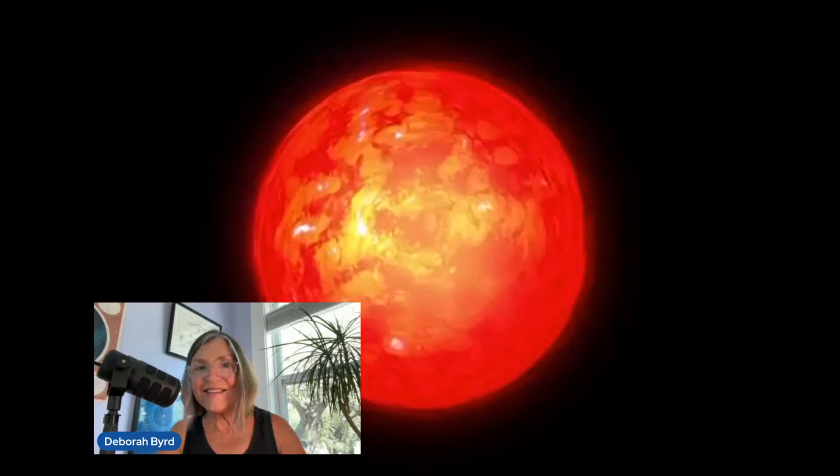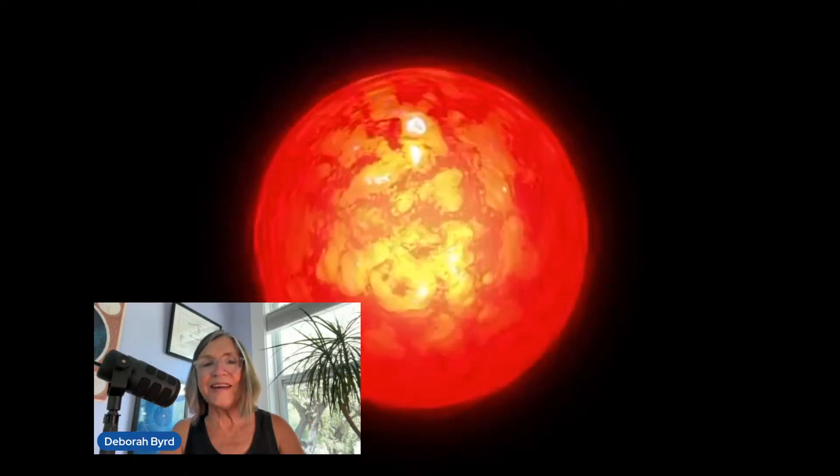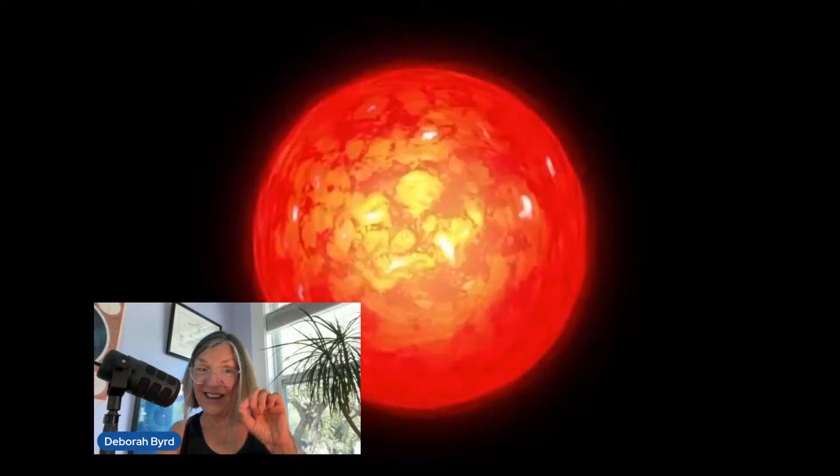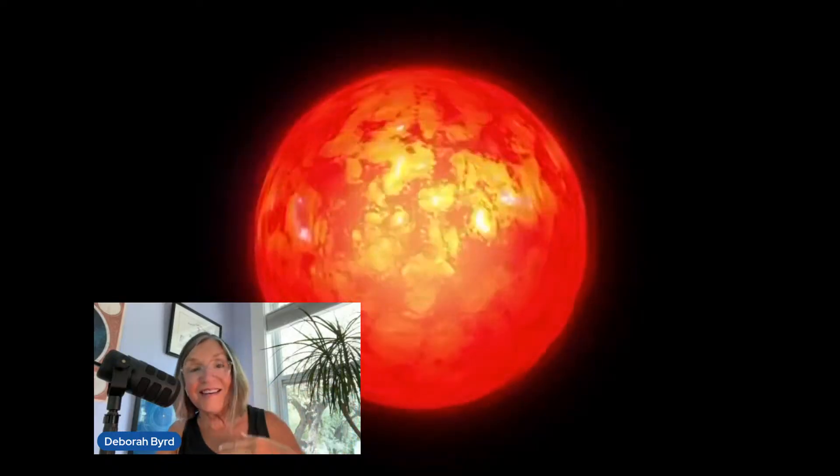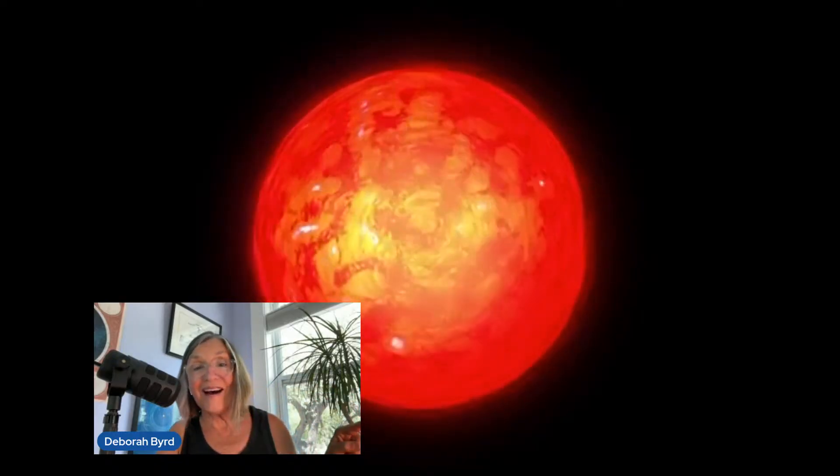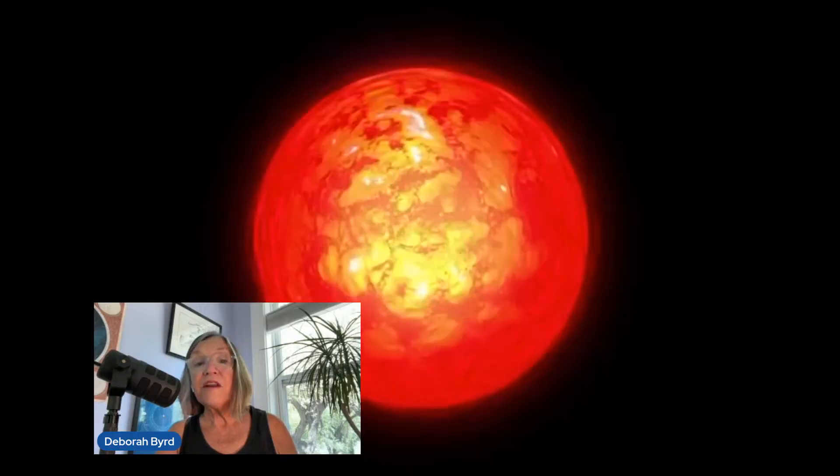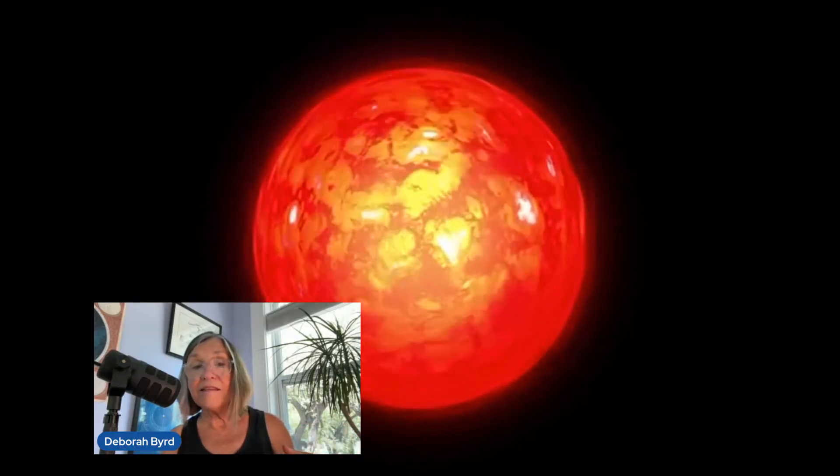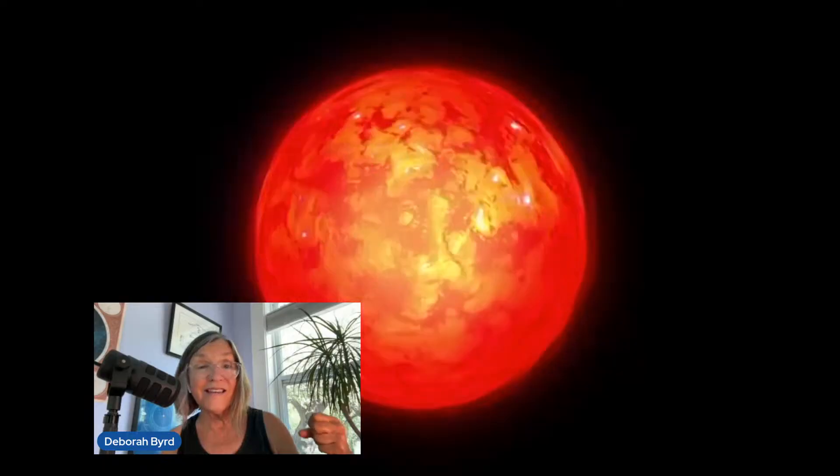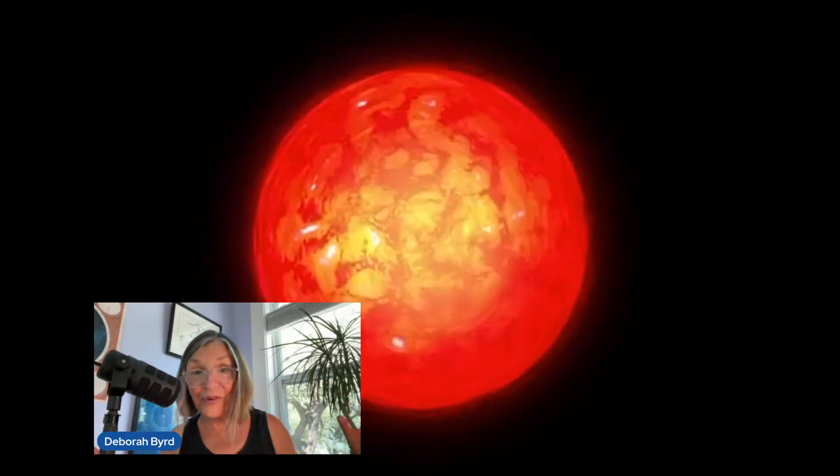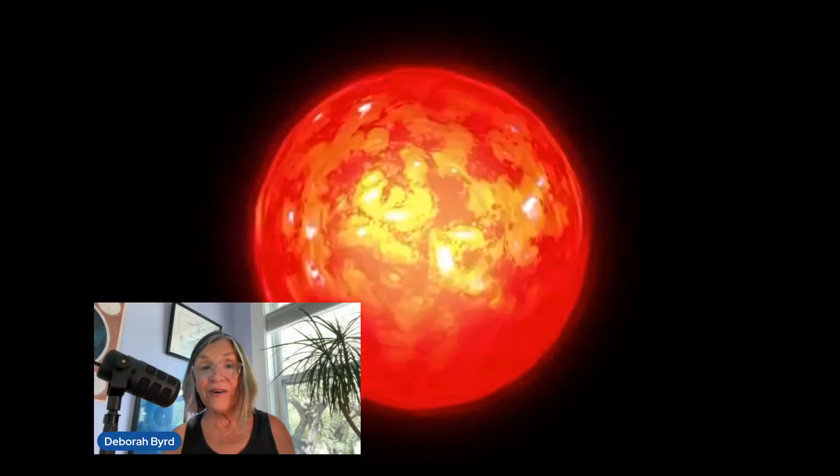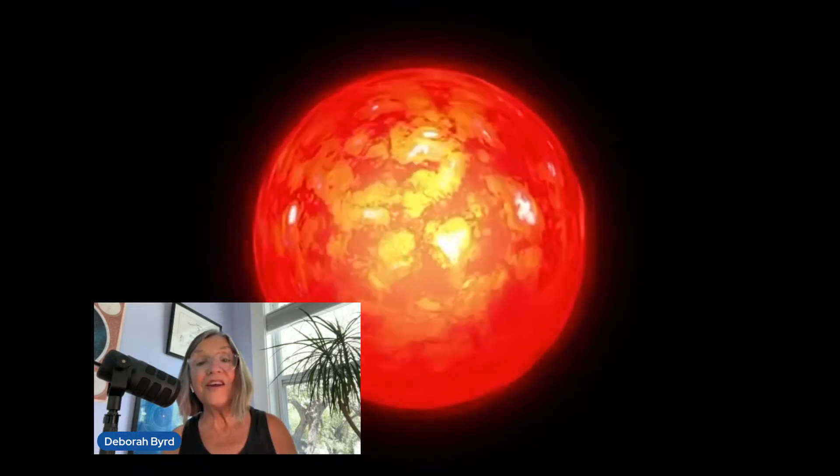And Antares has its own fascinating story. It's a red supergiant star. Approximately 700 of our suns could fit side by side in front of it. If Antares were placed in the center of our solar system, its outer surface would extend out to somewhere around the asteroid belt between the sun's fourth planet, Mars, and its fifth planet, Jupiter.